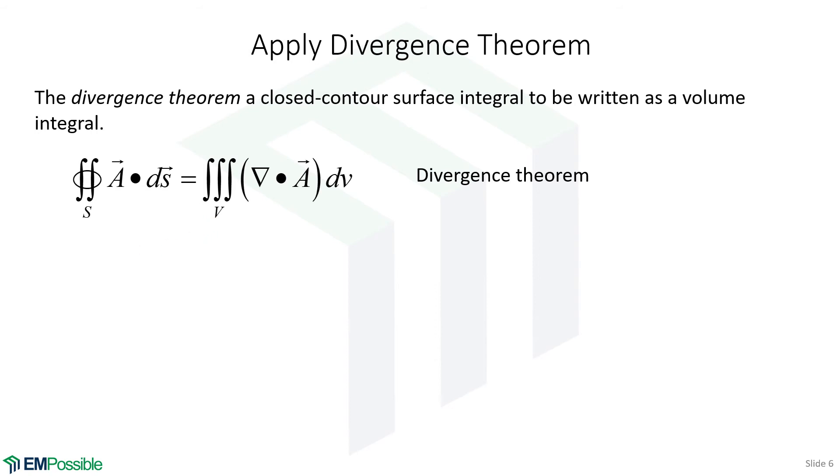The surface integral has to be a closed contour surface integral. In other words, that surface has to completely and perfectly enclose a volume. So if we were to integrate the flux around that surface, that has to be the same thing as integrating the divergence throughout the volume enclosed by that surface.